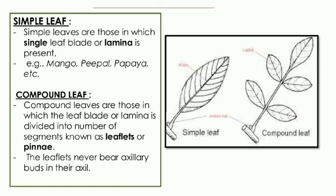When we say types of leaf, there are two basic types. The first one is simple leaf, the second one is a compound leaf. Simple leaves are those in which a single leaf blade or leaf lamina is present — where the lamina is complete and not dissected. For example, mango leaf, peepal plant leaf, papaya leaf.